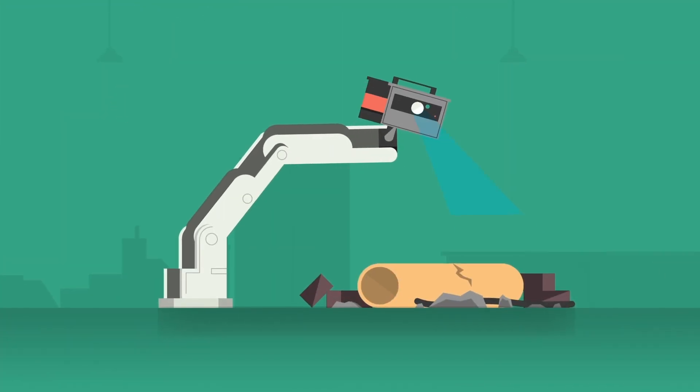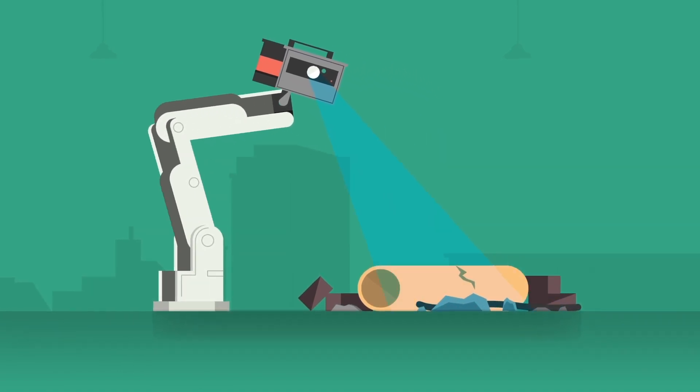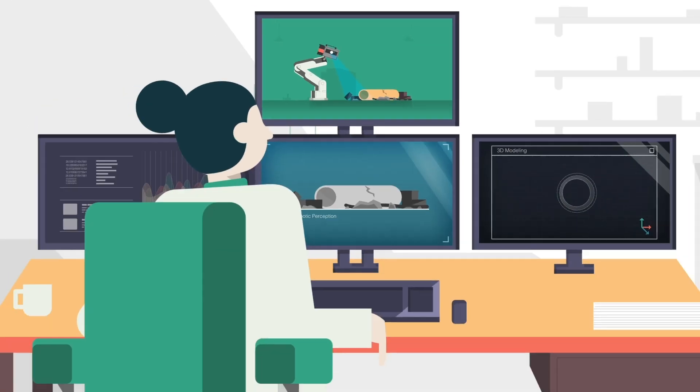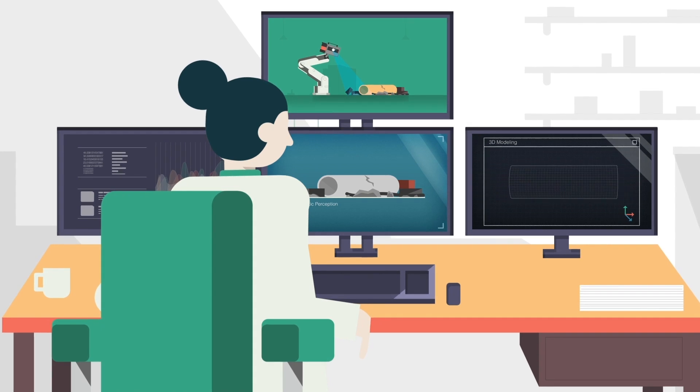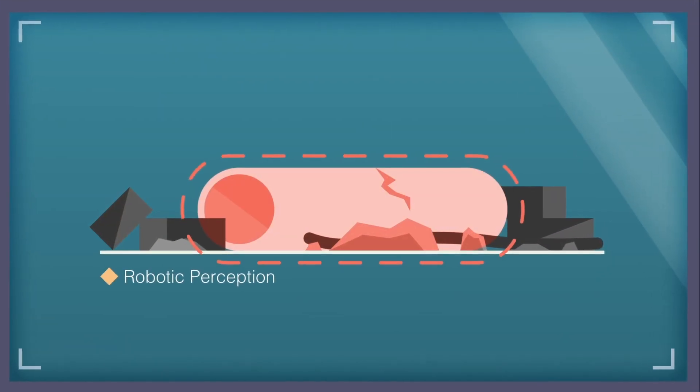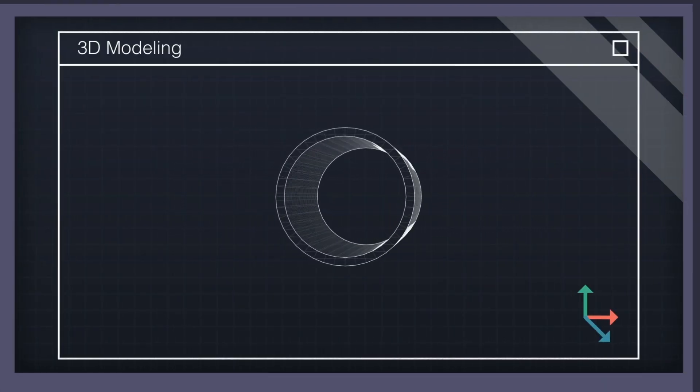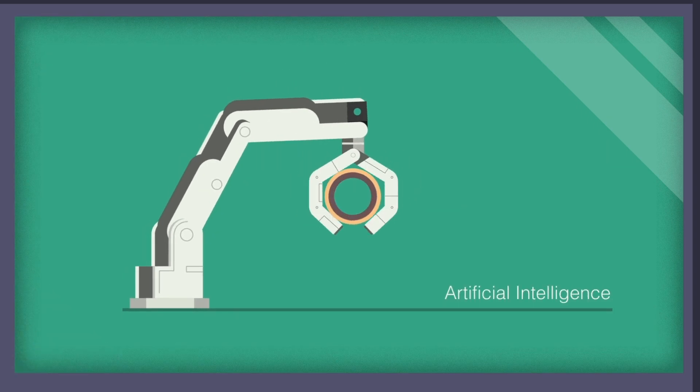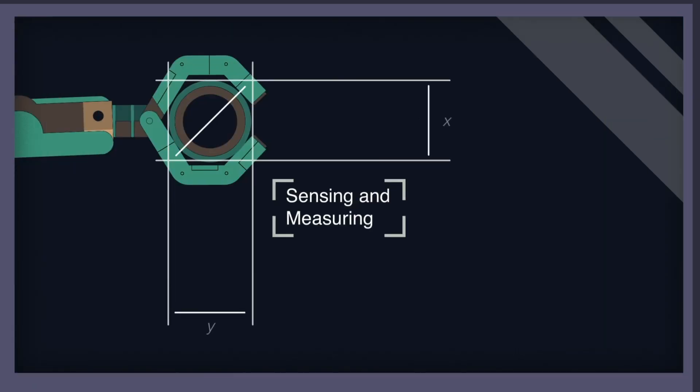To be really efficient, we need to develop a solid understanding of our surroundings. So the NCNR has experts in robotic perception, 3D modelling, artificial intelligence and sensing and measuring technology.